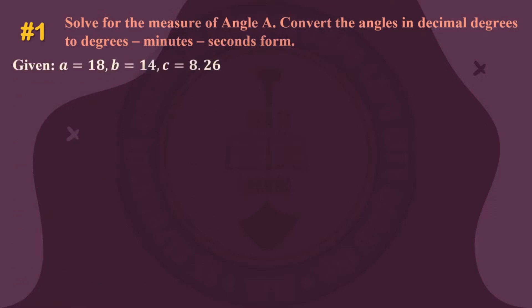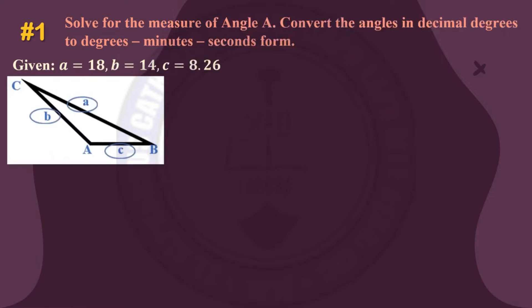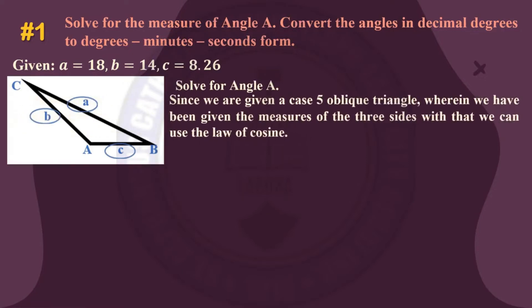Given: side a = 18, side b = 14, and side c = 8.26. With that we can sketch the triangle. As you can see, we have been given the measures of the three sides. Since we are given a case five oblique triangle where we have the measures of three sides, we can use the law of cosines.